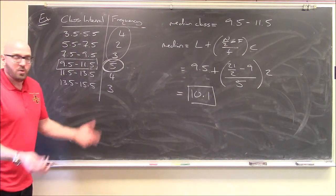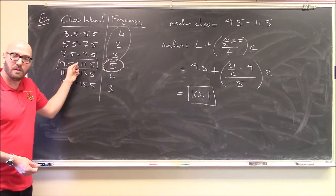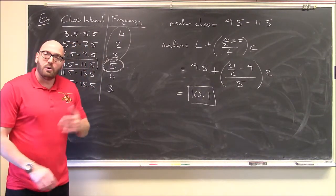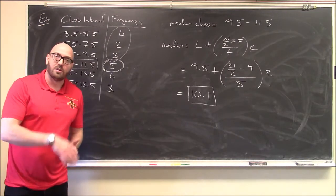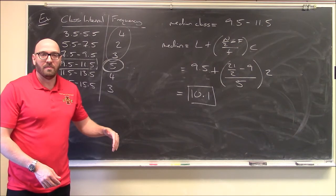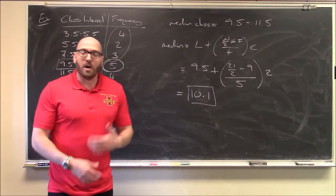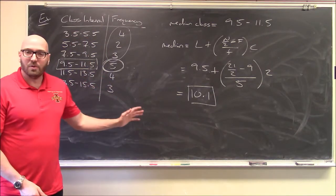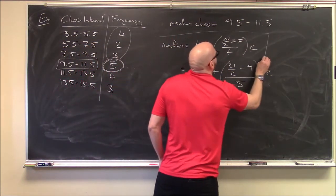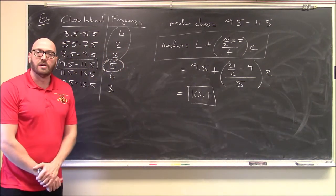The modal class — the most frequently occurring class — would be 9.5 to 11.5 with frequency 5, but the textbook doesn't typically ask about modal classes. Grouped data is more tricky than ungrouped, and it's probably something you haven't seen before. With these two examples, we've covered the key ideas. If you want to find the median for grouped data, I recommend using this formula — though the textbook does it slightly differently. Thanks.